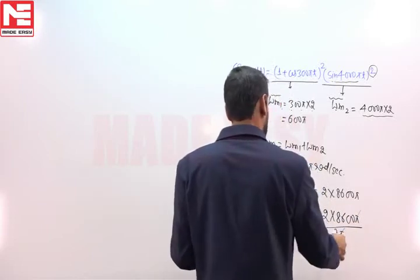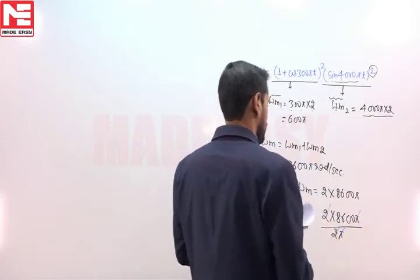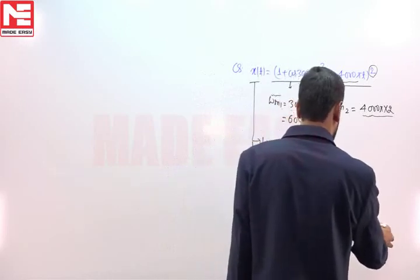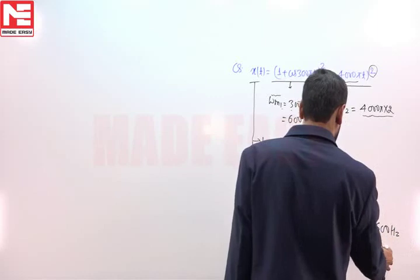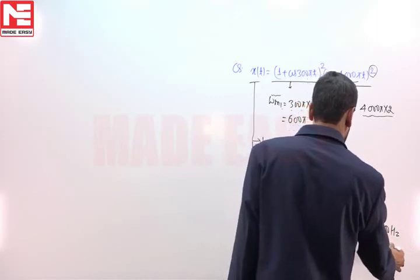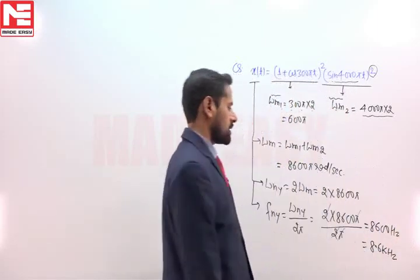π will be cancelled out and 2 will also be cancelled out. So F_Nyquist will be equal to 8600 hertz, and we can write this as 8.6 kilohertz.